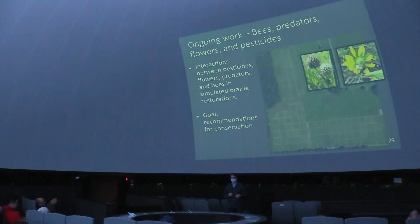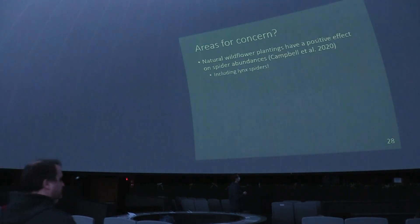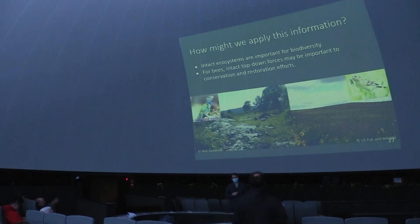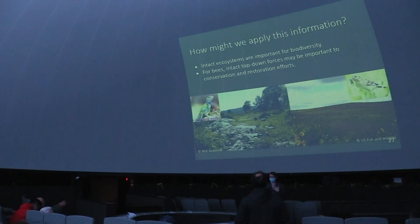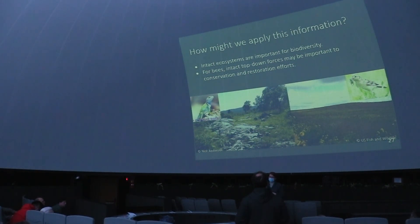Q: We don't have lizards around here, so what would eat lynx spiders locally? A: Looking at this picture, this bird looks like it has a very lynx-spidery shape item in its beak. Baby birds, other spiders — there's a lot more work to be done. We know a lot about how jumping spiders and crab spiders interact: early in their life, crab spiders are really afraid of jumping spiders, but when they get bigger the tables flip. It might even be things that eat the baby lynx spiderlings. For some reason people don't like to study spiders as much, so a lot less is known about them.